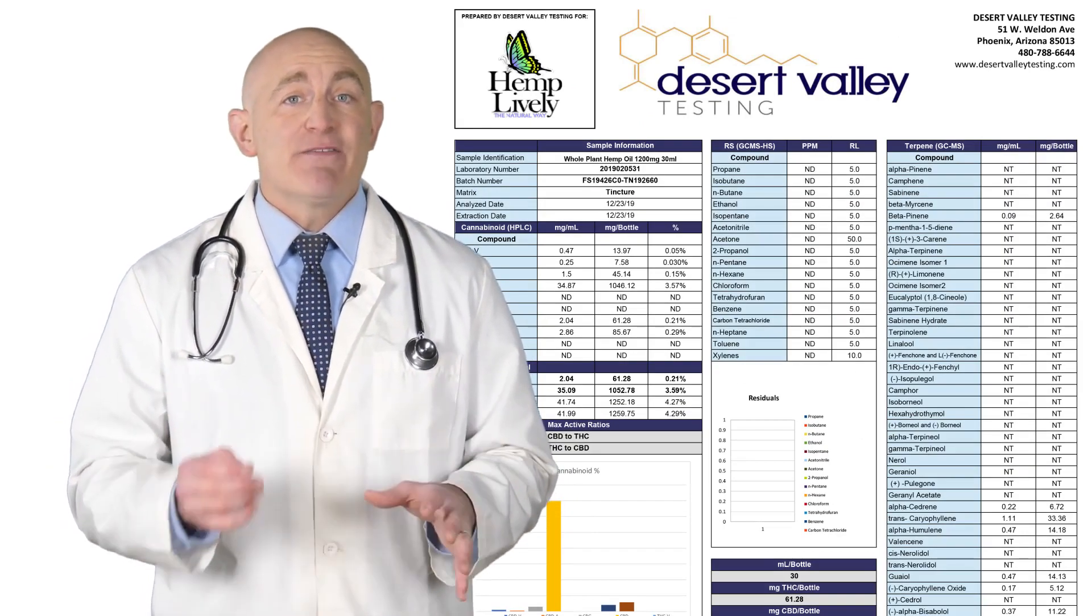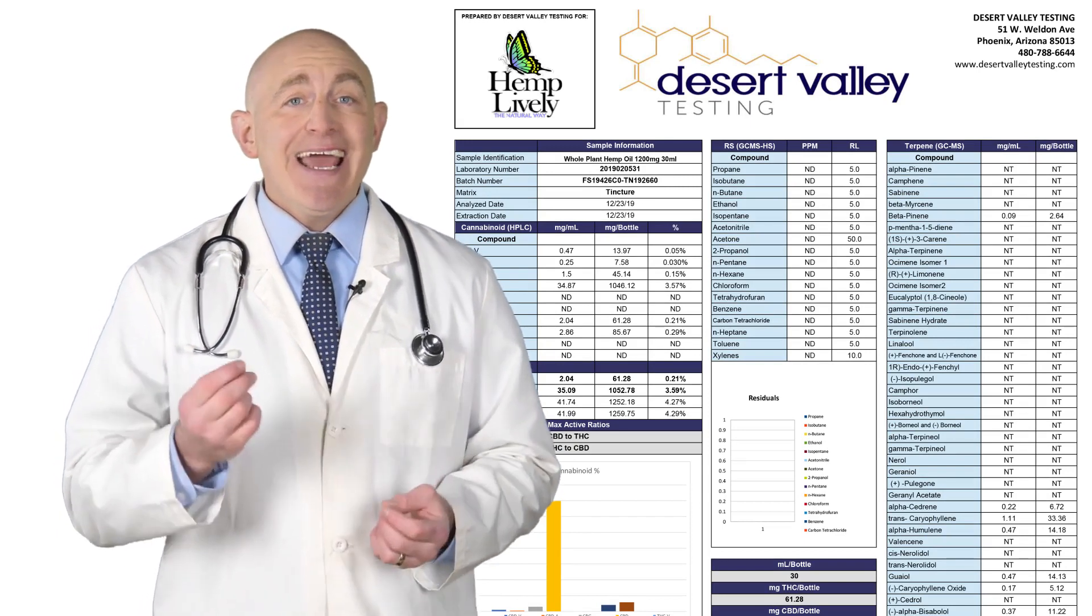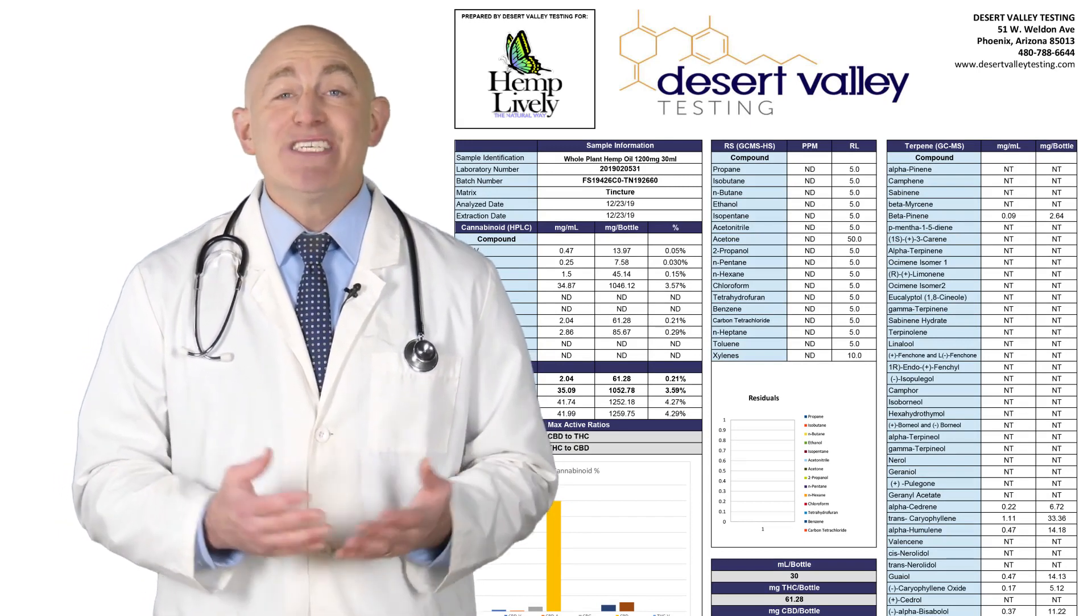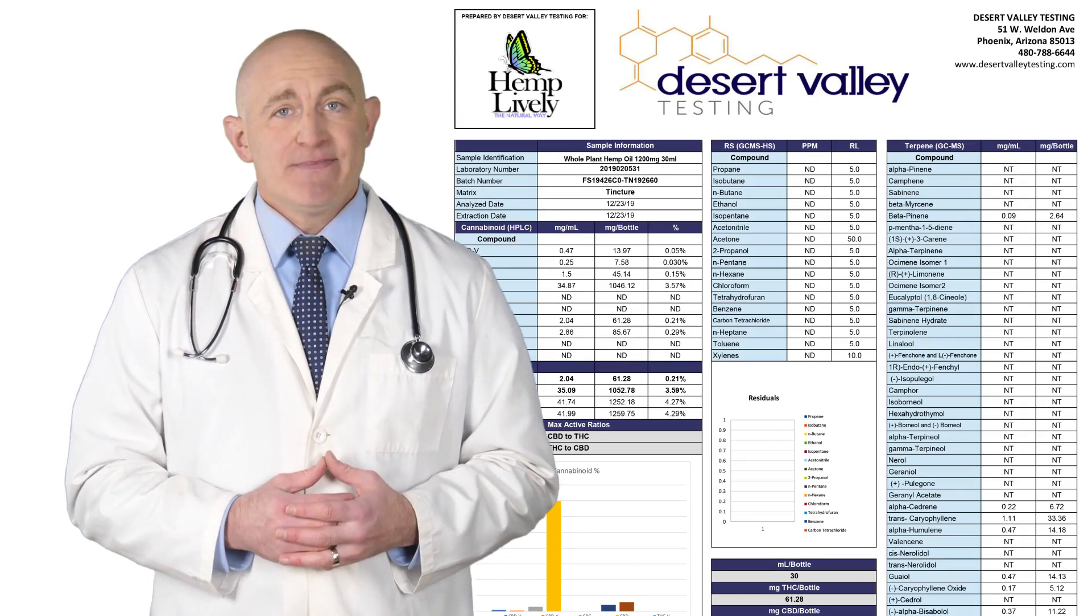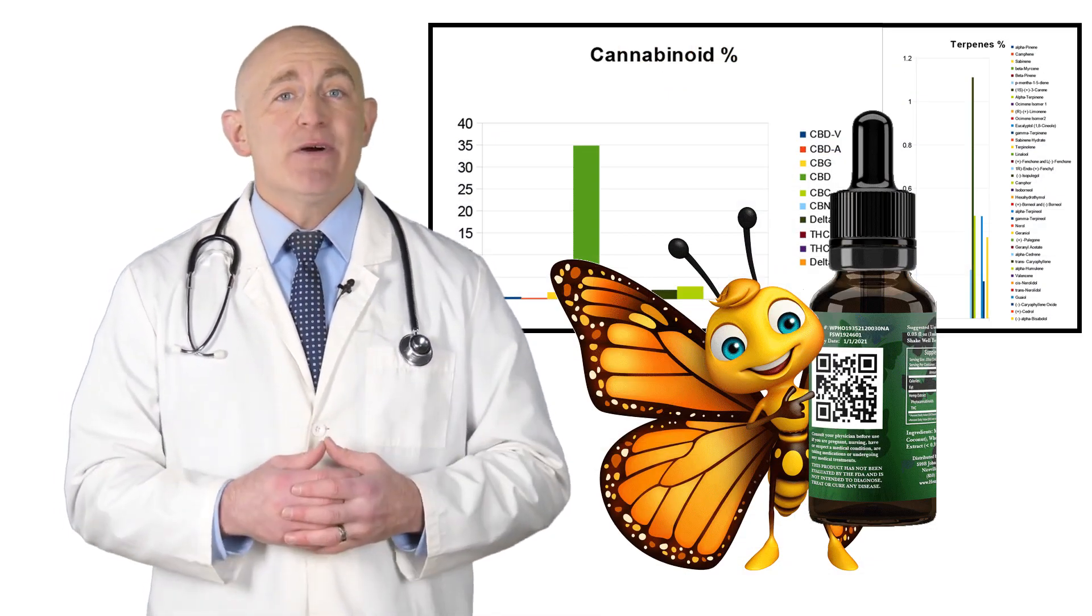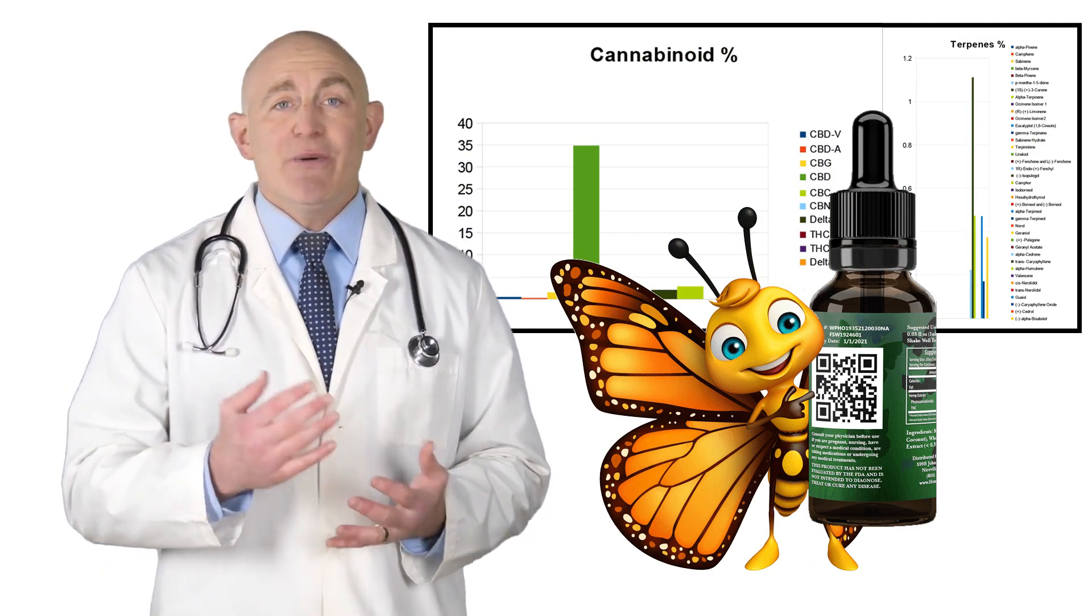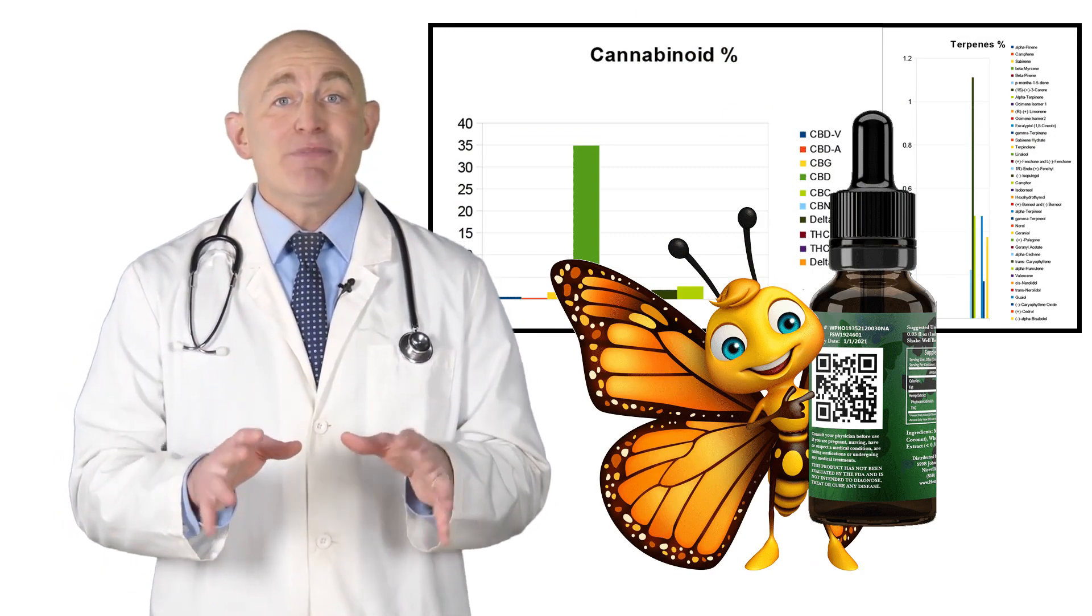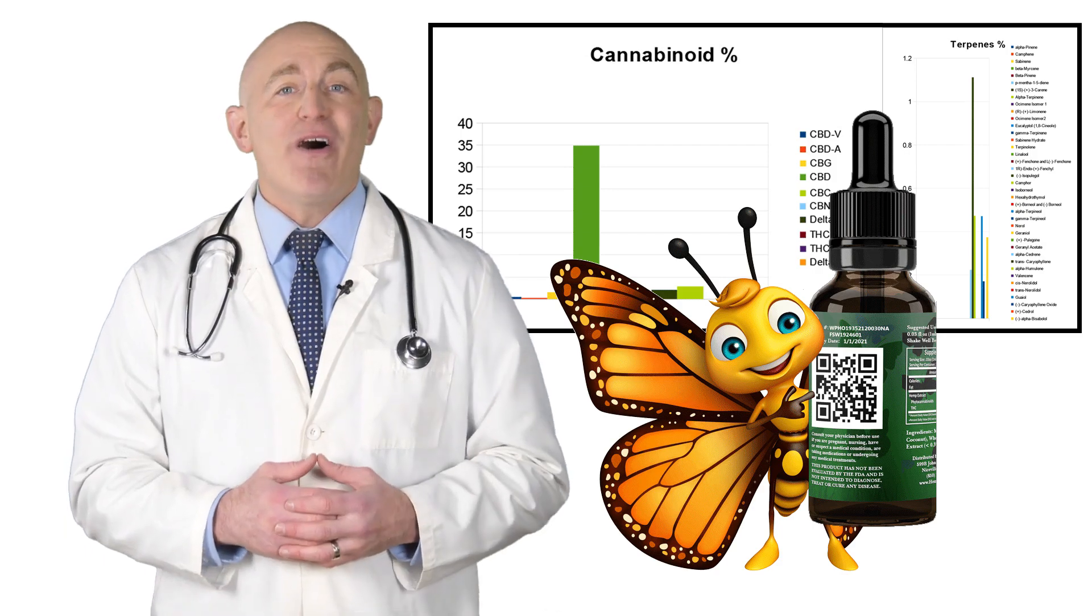Hemp Lively products are full panel lab tested for potency, terpenes, heavy metals, pesticides, residual solvent, and microbials. You'll be able to see the levels of these major phytocannabinoids on the Certificate of Analysis or COA, which can be viewed by simply scanning the QR code on the label.